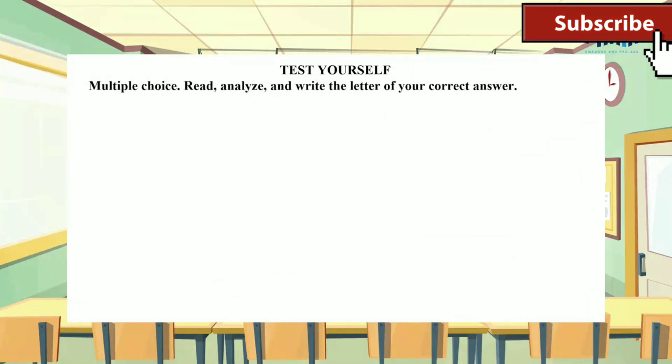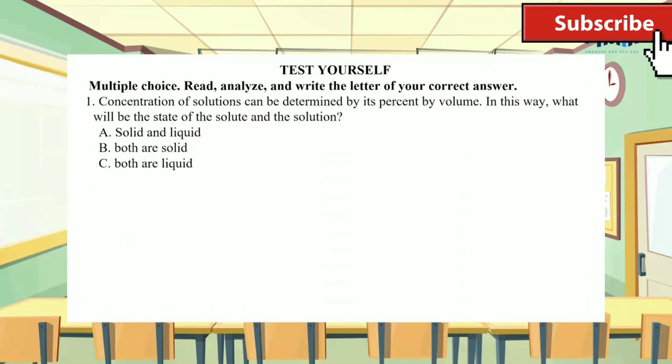You may now answer five multiple choice type of questions. Read, analyze, and write the letter of your correct answer. Number one: concentration of solutions can be determined by its percent by volume. In this way, what will be the state of the solute and the solution? A, B or C?